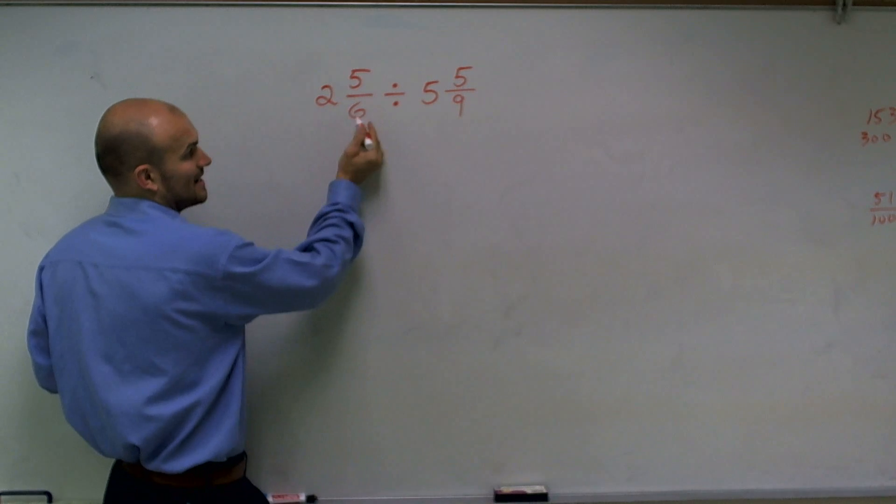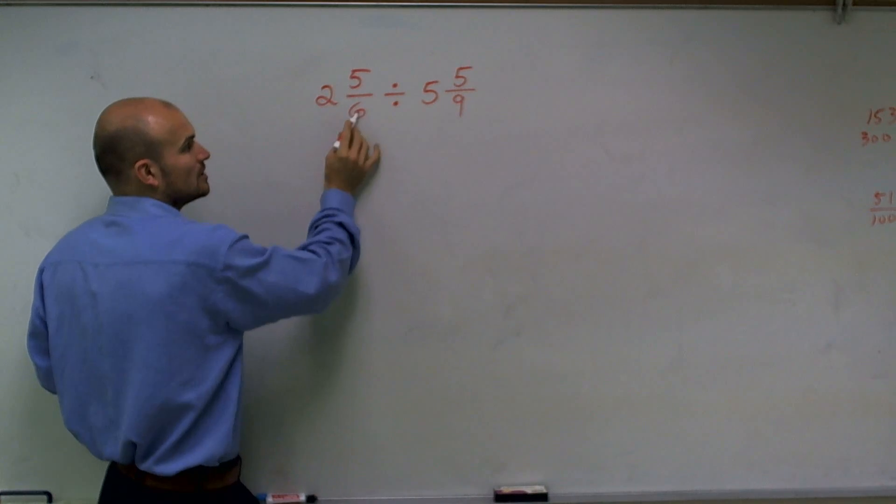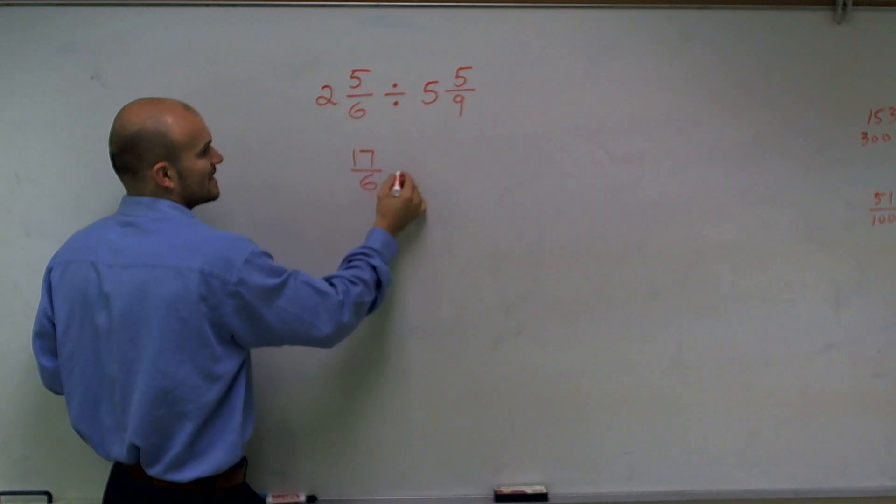So to do that, you're going to take your denominator, multiply it by your whole, and then add it to your numerator. So 6 times 2 is 12, plus 5 is 17, over 6.